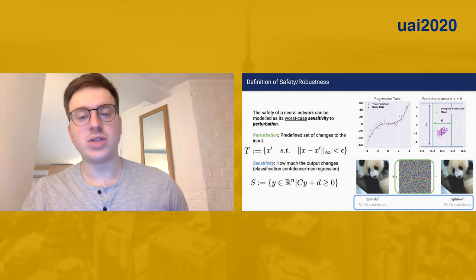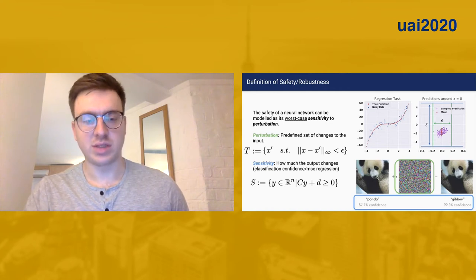we'd like for the Bayesian neural network function to be insensitive, so we'd like for it to satisfy some sensitivity criteria or be mapped to some safe set S.